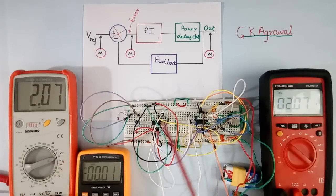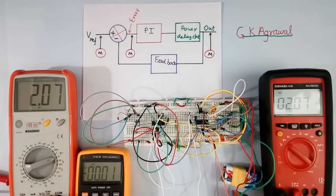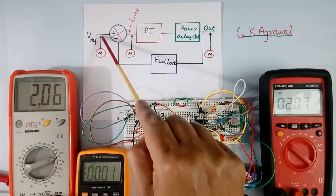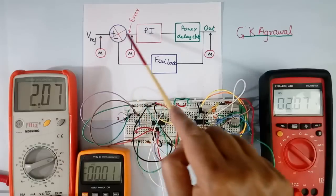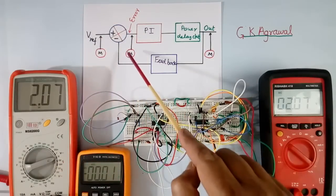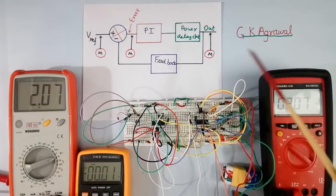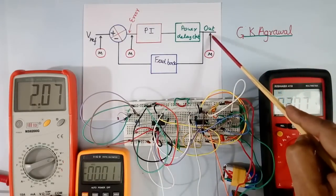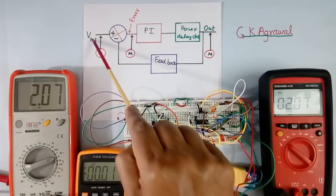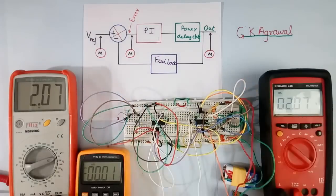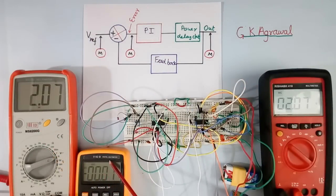Now this is the setup. I have connected 3 multimeters. One multimeter is connected at input, another one is connected at the error signal point, and this multimeter is connected at output. Both input and output should be equal — you see both are equal, and error is 0.